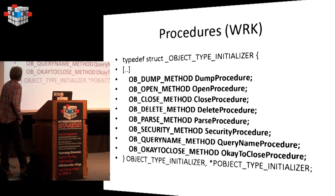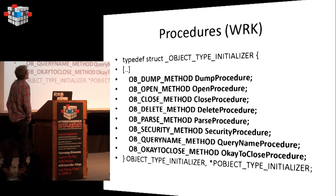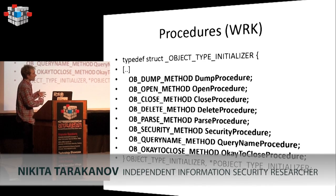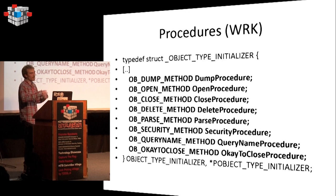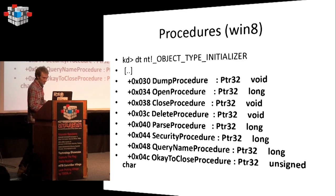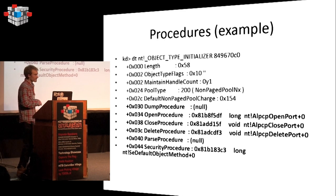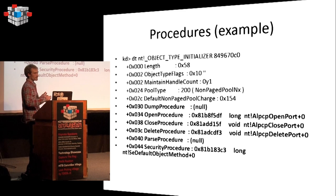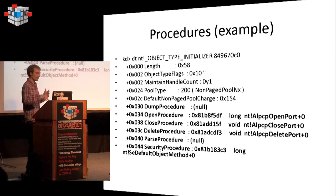The object type initializer structure holds pointers to procedures — for example, for open object, for deleting object, for parsing, etc. There is an example of the LPC object type: there are pointers to functions like open procedure is LpcOpenPort, close procedure is LpcClosePort, and so on.